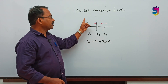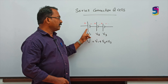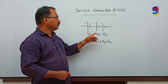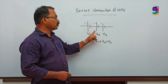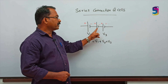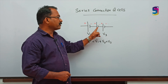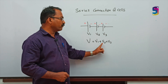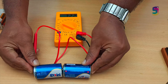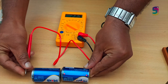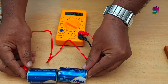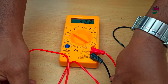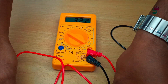Now we can discuss the series connection of cells. Here three cells of voltage V1, V2, V3 are connected in series. The negative terminal of the first cell is connected to the positive terminal of the second cell, and the negative terminal of the second cell is connected to the positive terminal of the third cell. Then we will get an effective voltage of V1 plus V2 plus V3. Here I have connected two dry cells of 1.5V in series. You can see in the multimeter the effective voltage is 3.23V.